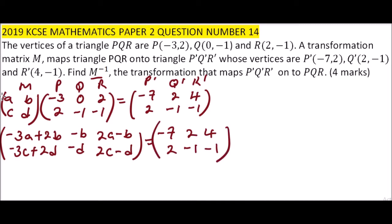In matrices, we say that the corresponding elements are equal. So if we take for example that element -B is the same as 2. So we can simply say -B equals 2. Divide both sides by -1, so B equals -2.